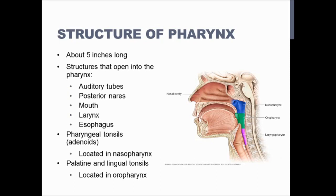The epiglottis covers your larynx when you swallow. It's a little flap of tissue, and if it doesn't cover your larynx when you swallow, you would swallow down the wrong pipe — causing you to cough because liquid went down your larynx rather than your pharynx and into your esophagus. It's supposed to stop food and drinks from getting into your lungs, but sometimes it just fails because of the wrong signals being sent to it.